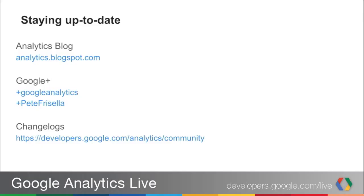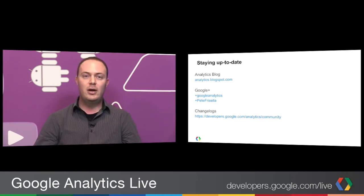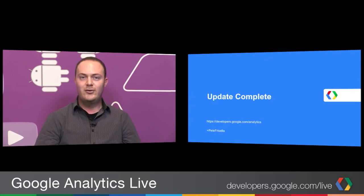Going forward, to stay up to date: we do our best to make sure you understand what features are coming out. You can visit our blog at analytics.blogspot.com. We have our Google Analytics Google+ profile, and you can follow me at Pete Frizzella — I usually post things we've released. I also really recommend you subscribe to our changelogs, especially if you're using the Core Reporting API and the Management API — we have detailed changelogs available via RSS feeds. Thanks for joining me today, and I'll see you next time.